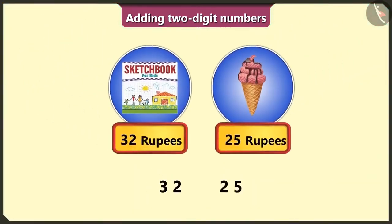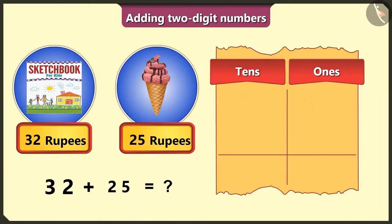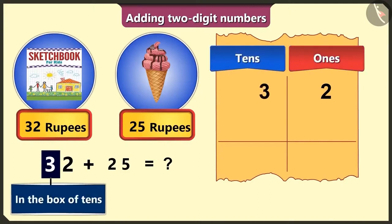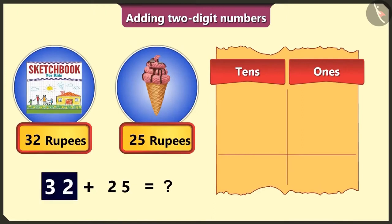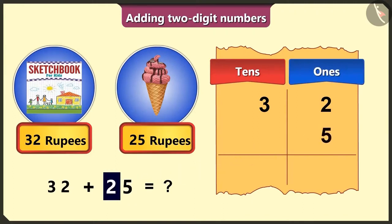Hey, Pilu! But how much money do I have to give in total? For this, we have to add 32 and 25. You are absolutely right. First of all, from 32 — in a two-digit number, the last digit is always written in the ones box and the first digit in the tens box. From 32, we write 3 in the tens box and 2 in the ones box. Then from 25, number 5 comes last, so 5 in the ones box, and 2 comes first, so we will write it in the tens box.